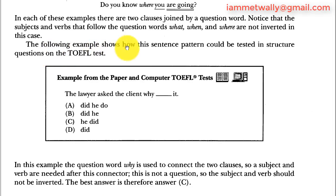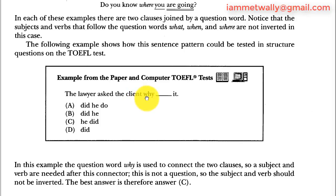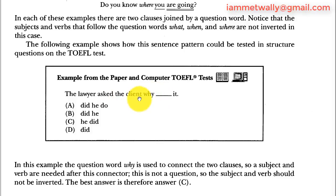The following example shows how this sentence pattern could be tested in instructional questions on the TOEFL test. 'The lawyer asked the client why...' — if you notice, there is a sentence before the connector 'why', so it is just a connector. I don't have to invert; I just have to continue as a normal sentence: 'why he did it.' The subject must come first.